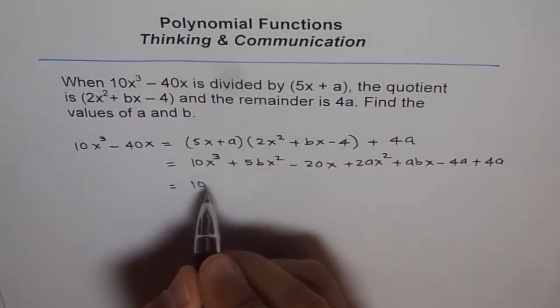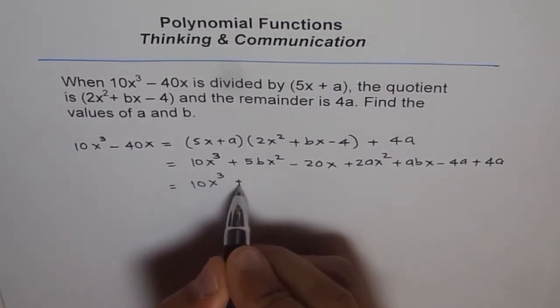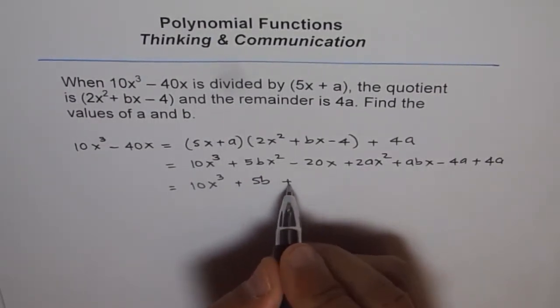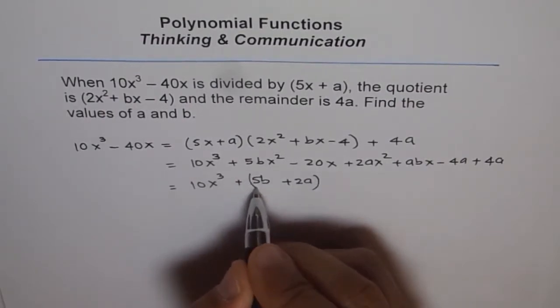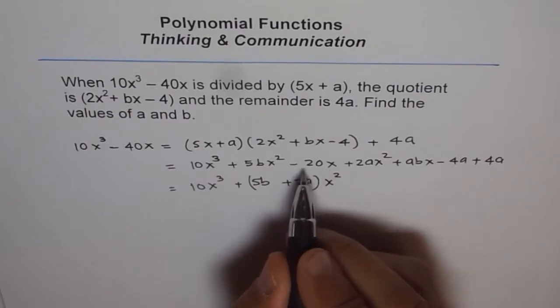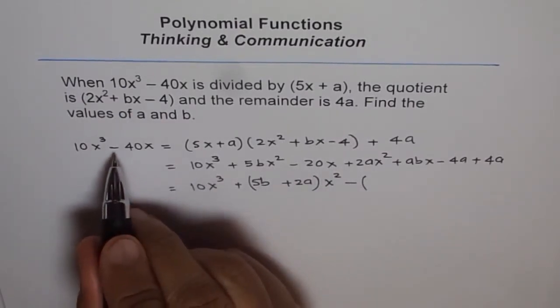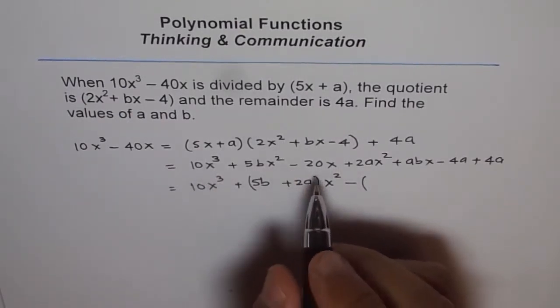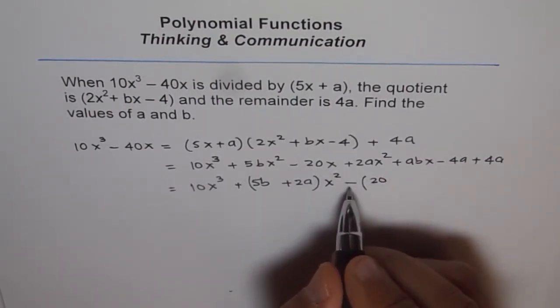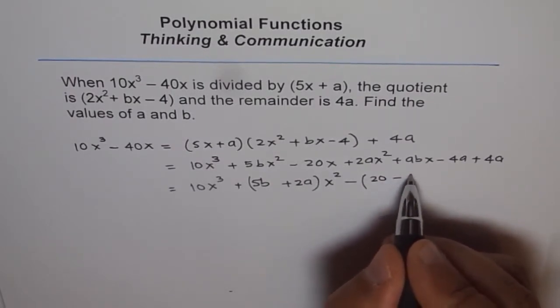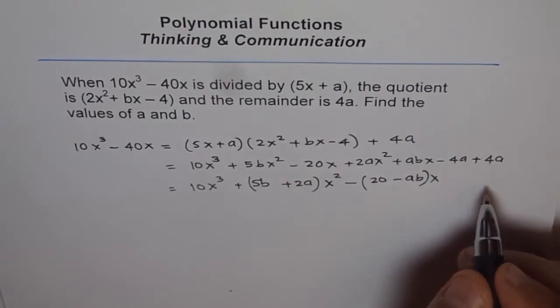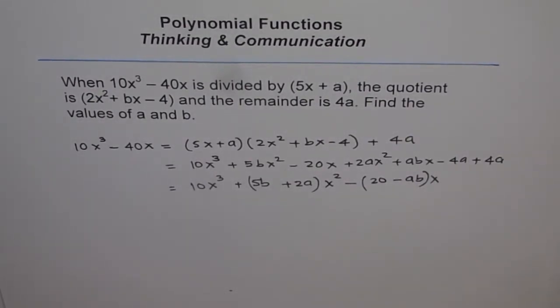Let's simplify it. So we got x³ term as 10x³ and in x² terms we have 5b from here and plus 2a. So I am writing 5b + 2a as my coefficients for x². And in x terms I have minus 20 and plus ab. Since I have taken minus outside, I will write minus ab here and minus 4a plus 4a is 0. So that is what I get on the right side.